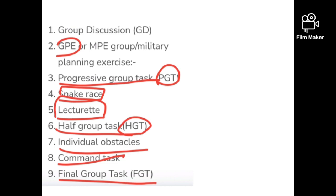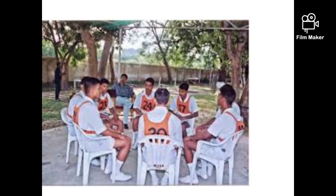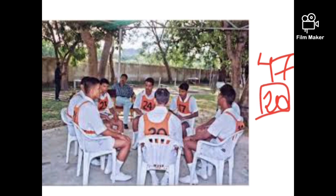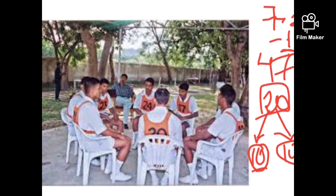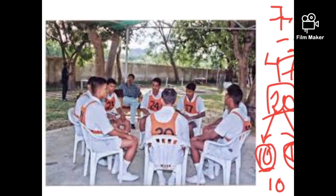Let me tell you how our group was divided. In my previous video I mentioned we had 47 candidates, out of which 20 got screened in. From those 20, the GTO told us we were divided into two groups of 10 each. My group had seven freshers and two or three repeaters. The other group was mostly repeaters.